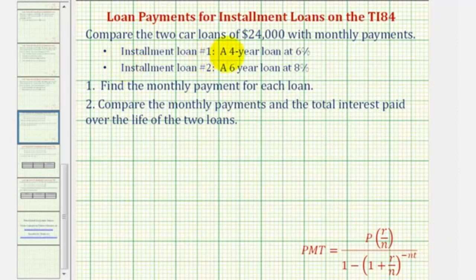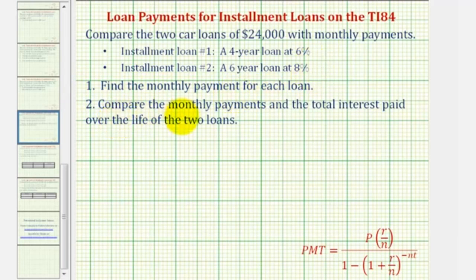In this example, we're going to compare two car loans of $24,000 with monthly payments. Installment loan one is a four-year loan at six percent. Installment loan number two is a six-year loan at eight percent. First, we want to find the monthly payment for each loan. Then, compare the monthly payments and the total interest paid over the life of the two loans.